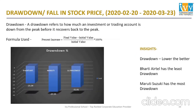The next parameter is drawdown, or the fall in percentage of the stock price. The timeframe considered is from 20th February 2020 till 23rd March 2020 — the COVID period when a significant fall came in the markets. Drawdown is basically the fall in stock price, and the formula used is: (final value minus initial value) divided by initial value, multiplied by 100.